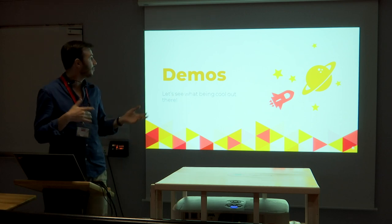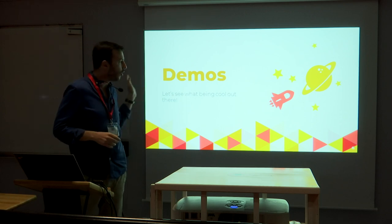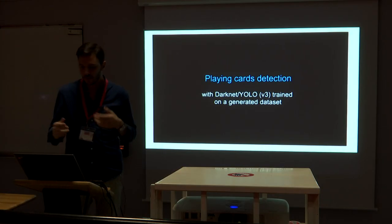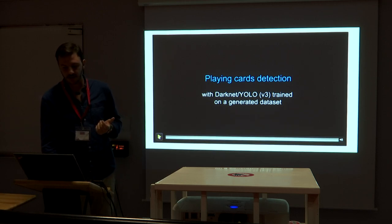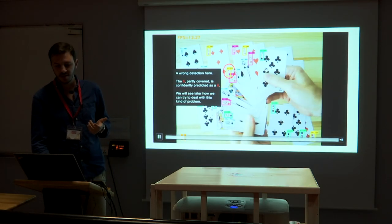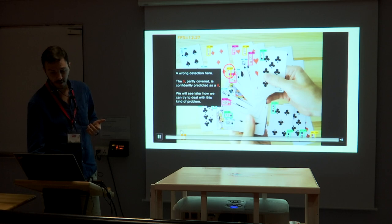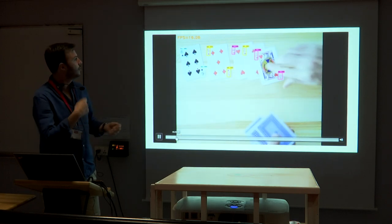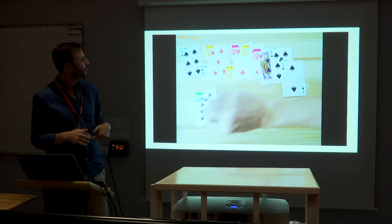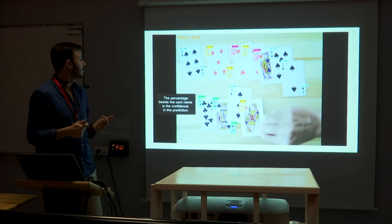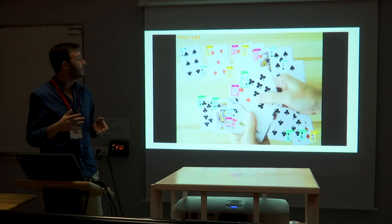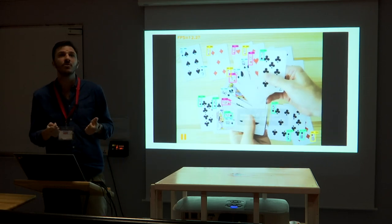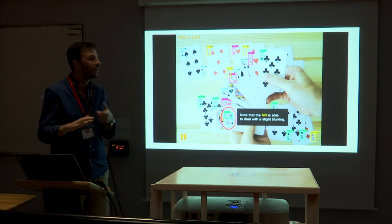We'll see some cool demos using different model types for all four problem categories. The first uses YOLO to detect which cards are being dealt — imagine using this in Vegas. You show the cards and the model detects exactly which number they are. Using this in Vegas could be a little illegal, but it would be really useful for a machine to play cards with you, knowing when to play a 2 or a 7.